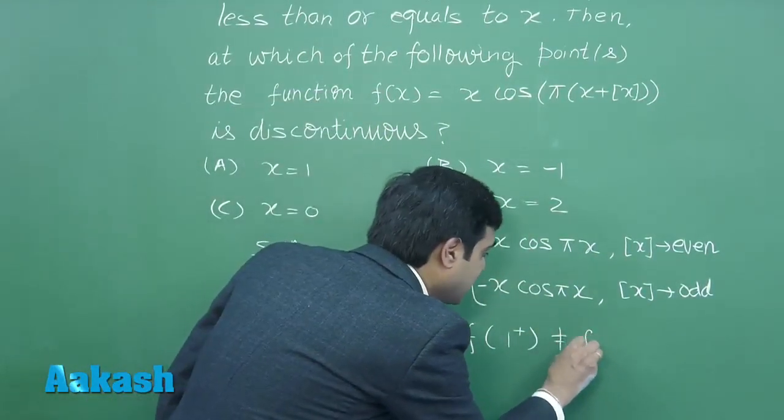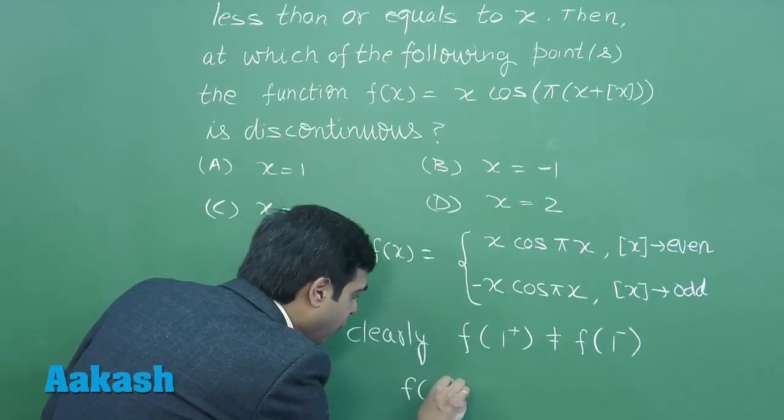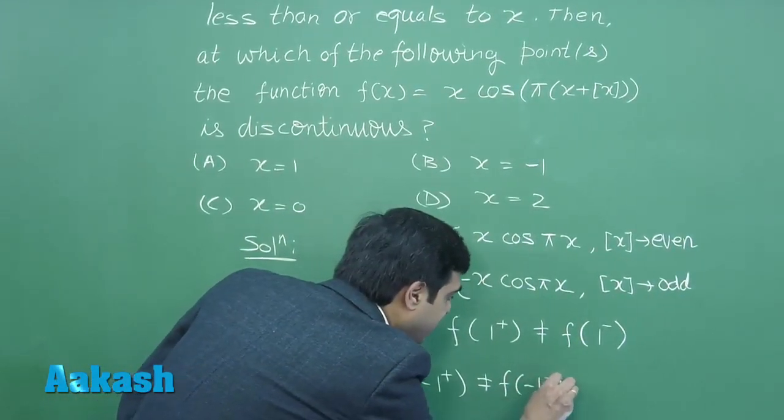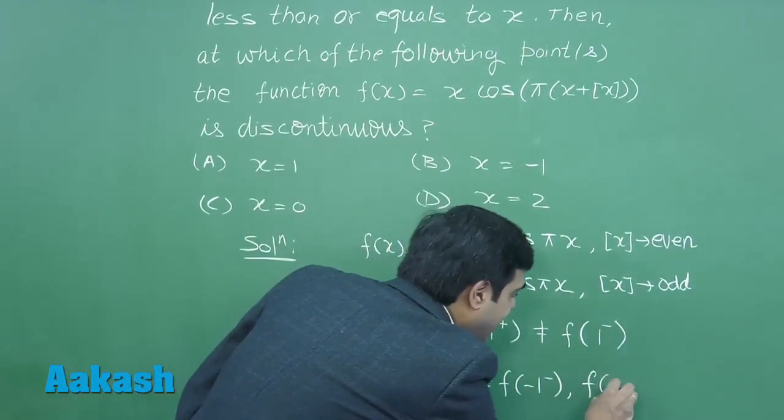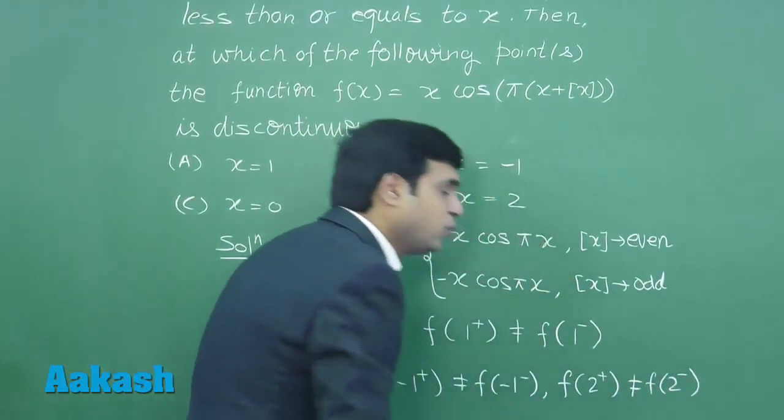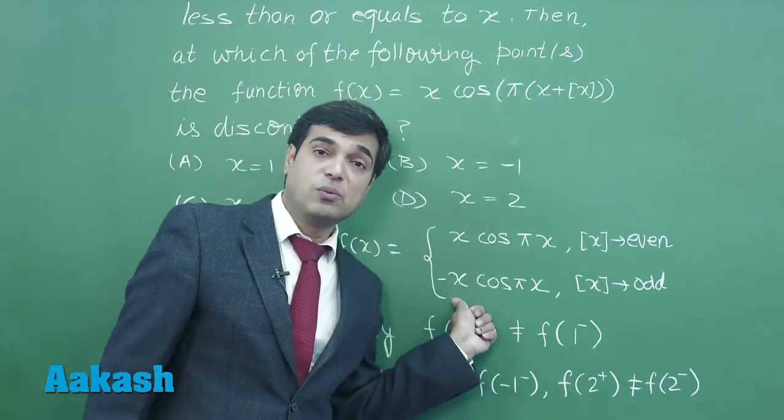Similarly, f of minus one plus is not equal to f of minus one minus, as well as f of two plus not equal to f of two minus. Zero is different because x is also multiplied.